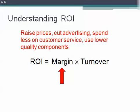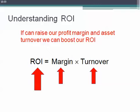Another strategy might be to try to boost our operating profit margin — we could raise our prices or cut our costs. We could spend less money on advertising, less on customer service, or use lower quality, lower cost components. All of those things would tend to raise our profit margin, but in the long term it would come at the expense of lower sales, and we would see our asset turnover drop. The key to being a successful manager is finding things that will both raise our profit margin and raise our asset turnover, or raise either one without causing a decrease in the other.